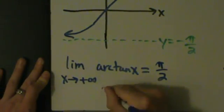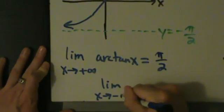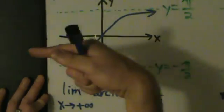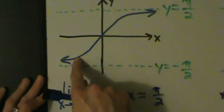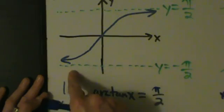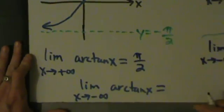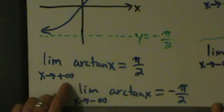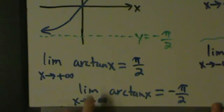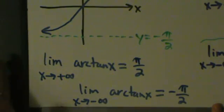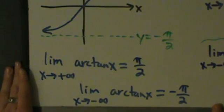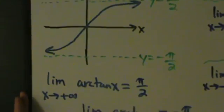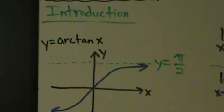Similarly, the limit as x goes to negative infinity of arctan of x — if we look at the graph, as x goes off really far to the left and we follow along the blue curve, the values of y are getting closer and closer to the asymptote at y equals negative pi over 2. So this limit is negative pi over 2. We can see that the limit at positive infinity and the limit at negative infinity aren't necessarily the same thing. For simple rational functions with horizontal asymptotes they'll be the same, but with oblique asymptotes or more complicated functions, you might have different limits. We'll see more examples in the next few videos.